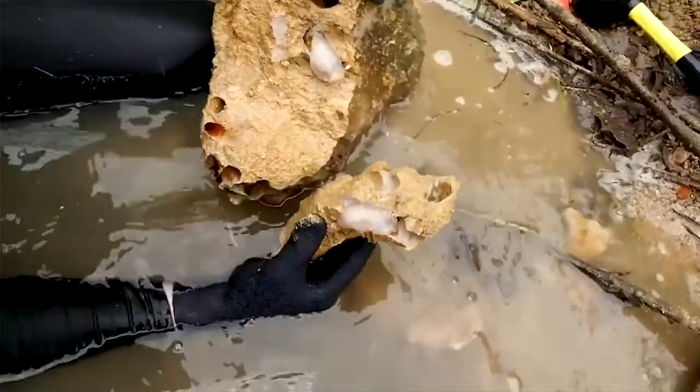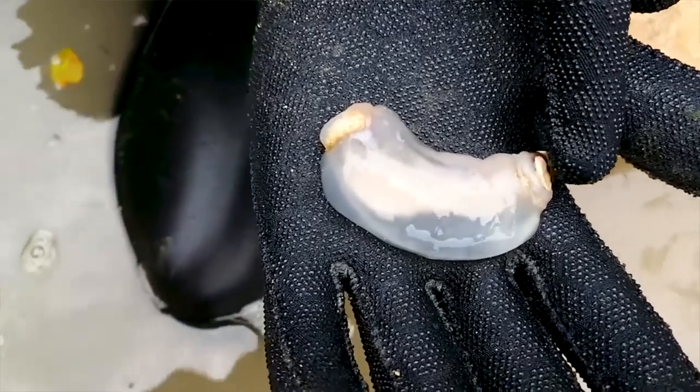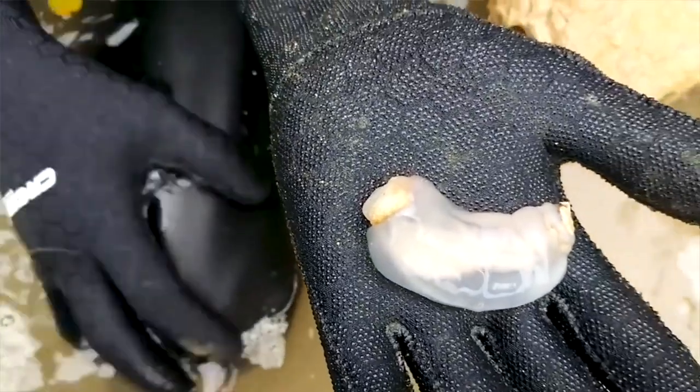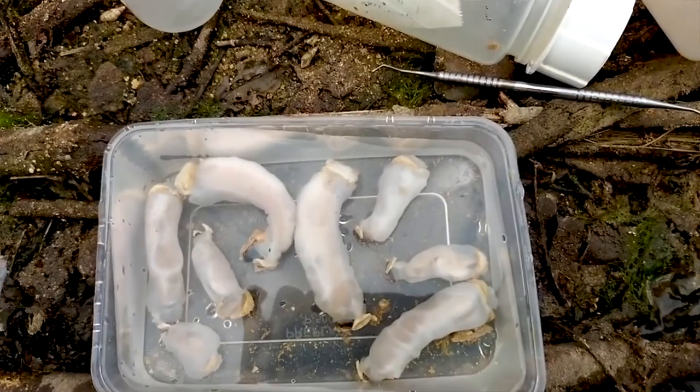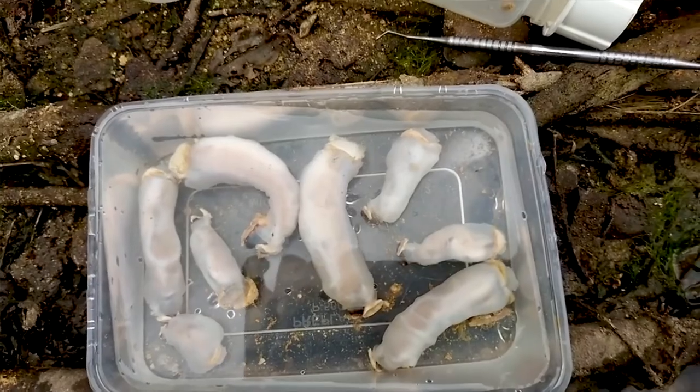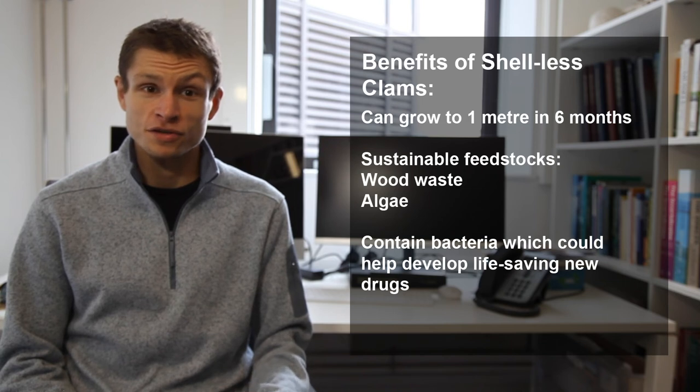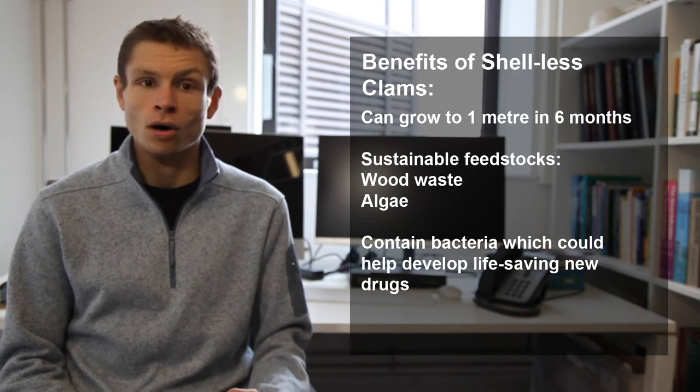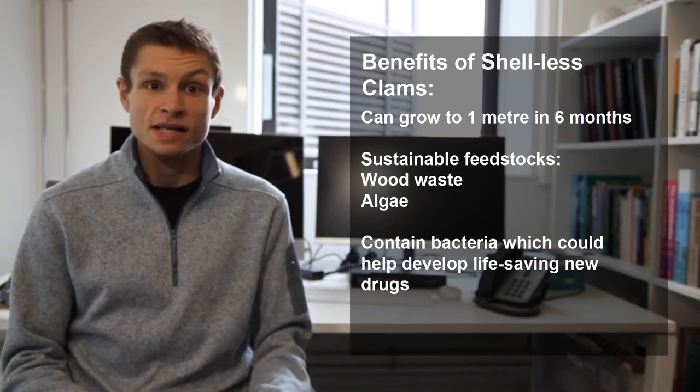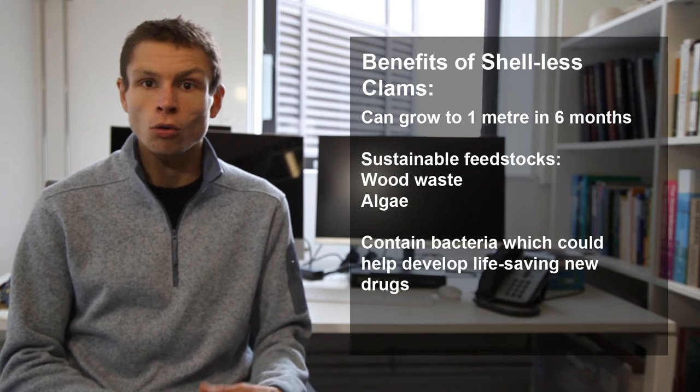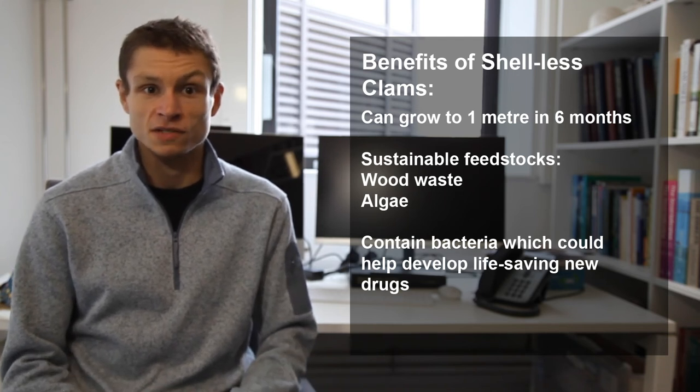We're trying to work out could we grow these species on a very large scale as a food product. They're very nutrient rich just like regular clams but with that fast growth potential and the potential to feed them on really sustainable feedstocks such as wood or algae. They could really be a food of the future. Think about them on par with termites, insects, seaweed, all of those fast developing food sources for the future.